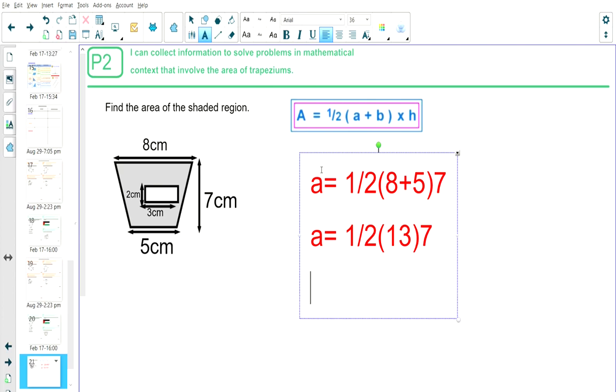Next, I'm going to do a half, 13 times 7 is 91, so that's going to be multiplied by 91. And a half times 91 is 45.5. So the area is 45.5 centimeters squared. That's the area of trapezium.